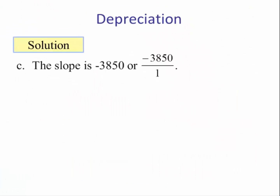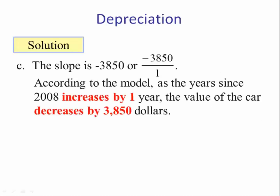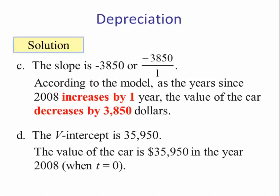Part C: the slope is negative 3,850 over 1. According to the model, as the years since 2008 increase by 1 year, the value of the car decreases by $3,850. Part D: the V-intercept is 35,950, meaning the value of the car was $35,950 in the year 2008, when T = 0.